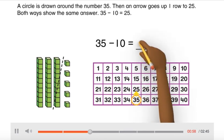Both ways show the same answer: 35 minus 10 equals 25.